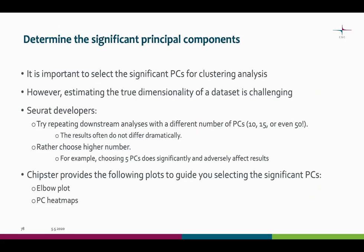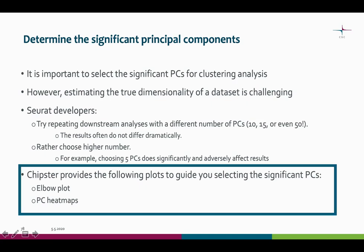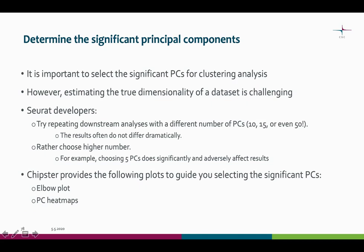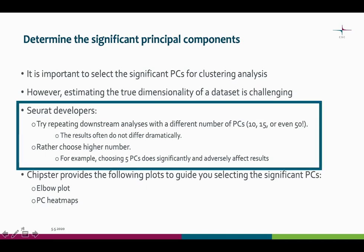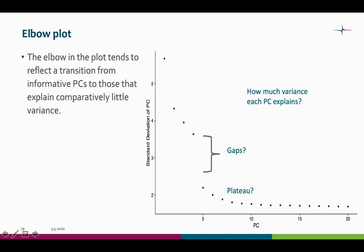After the principal component analysis, we want to determine the significant principal components — it's very important to select those for the clustering step. However, it's always quite challenging to estimate the true dimensionality of a dataset. The Seurat developers advise that you can try repeating the analysis with different numbers of principal components, as the results often do not differ that dramatically. They also say to rather choose a higher number, but don't be too greedy — for example, choosing only five principal components can make the rest of the analysis a bit difficult.